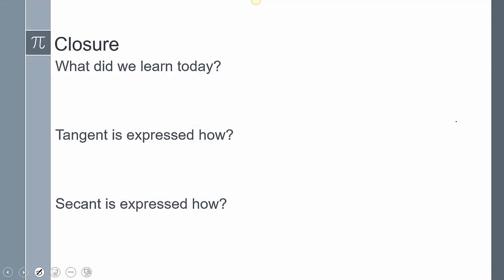So closing today's lesson, what did we learn today? We talked about the unit circle again and evaluating those trig values, but we focused on tangent and the reciprocals. So I want to hear from you guys, how is tangent expressed, and how is secant expressed? So this does conclude our lesson. If you have any other questions, please leave them in the comments. Thank you.